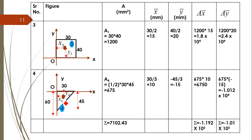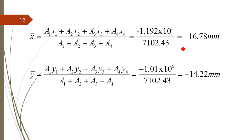The fourth shape is in the fourth quadrant, so x-bar is positive and y-bar is negative. Area of triangle = ½ × base × height. From the 90-degree side, x-bar = one-third, and y-bar is also one-third — so 30/3 and −45/3. Compute a×x̄ and a×ȳ. Finally, taking the summation of all columns, x-bar = −16.78 and y-bar = −14.22.